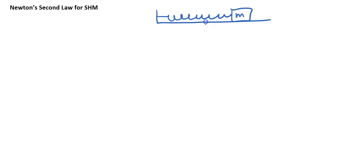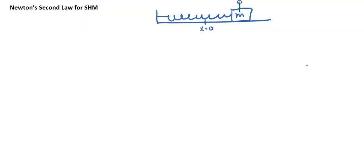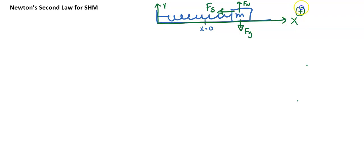Imagine we have a spring oscillating back and forth in simple harmonic motion — so x equals A is some point x, and it'll oscillate back and forth. Go ahead and draw a free body diagram of what forces are acting on it. We have the surface pushing up (F_N), gravity pushing down (F_g), and the spring — because it's to the right of equilibrium — pulling back to the left. Up and down is the y direction, horizontal is the x direction, and to the right is positive.